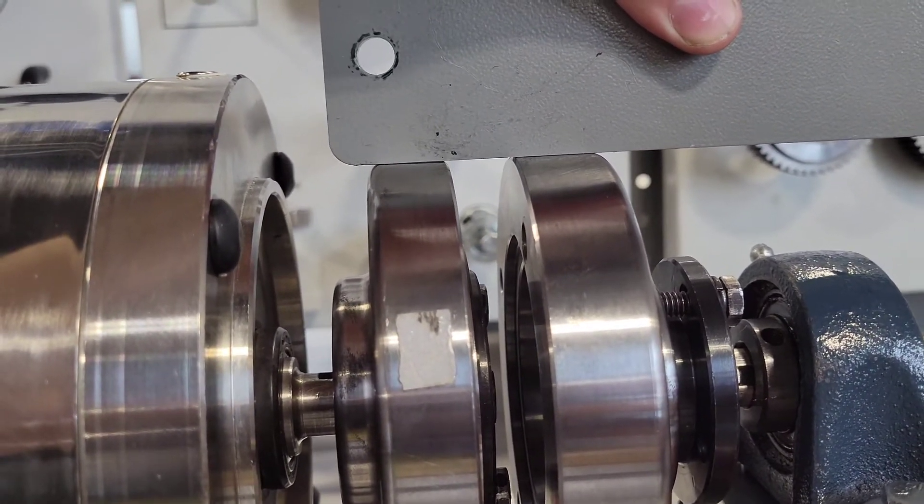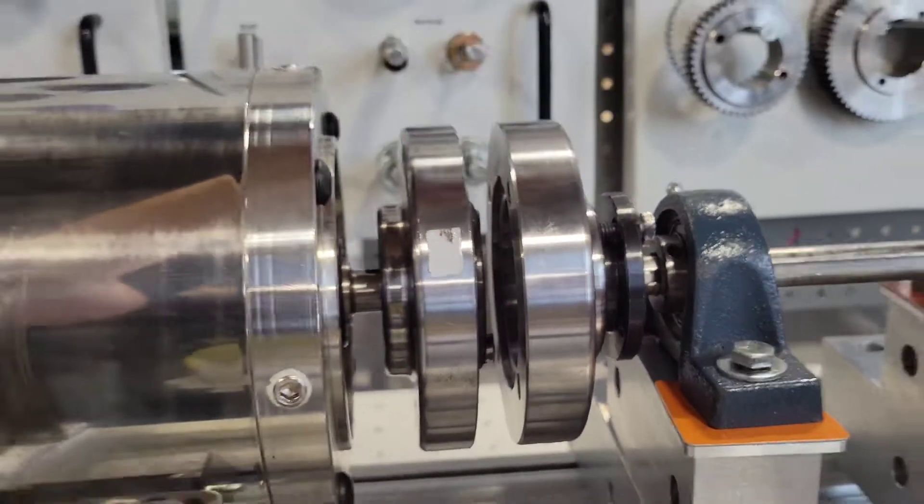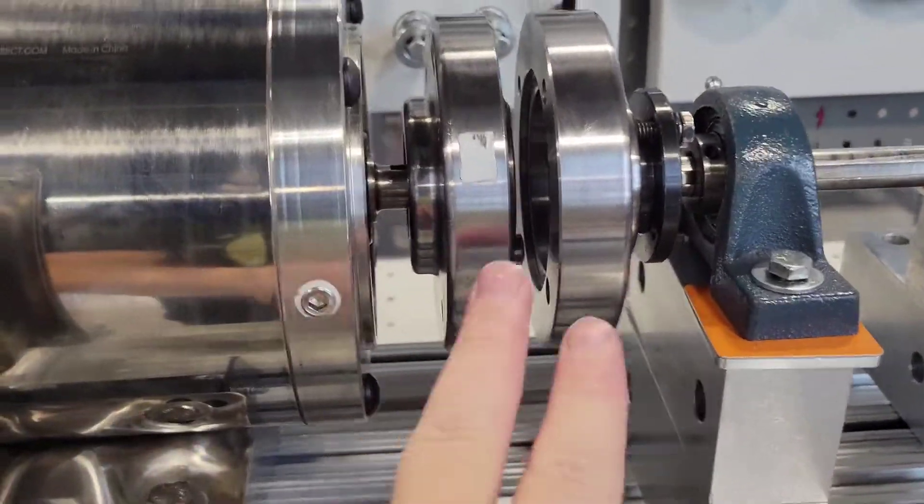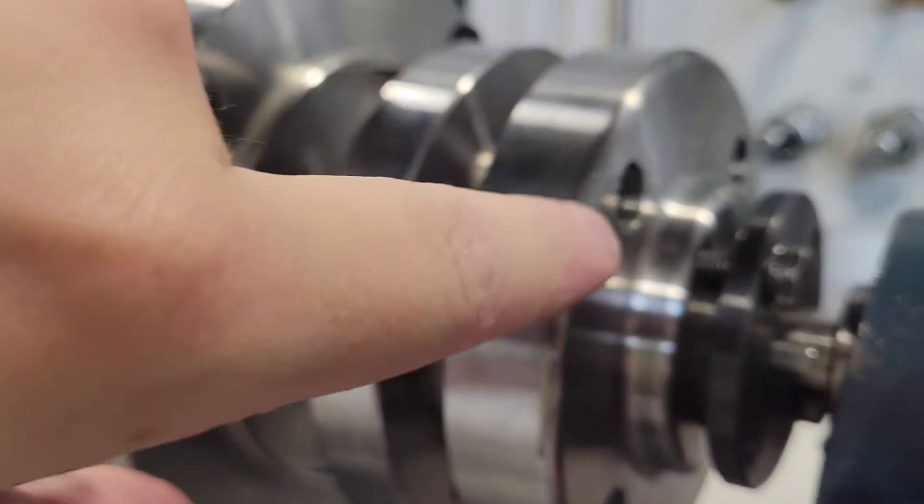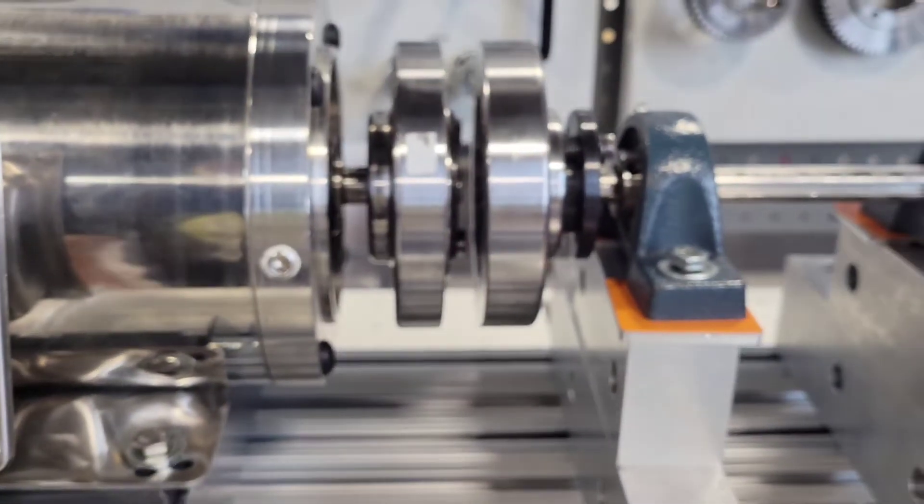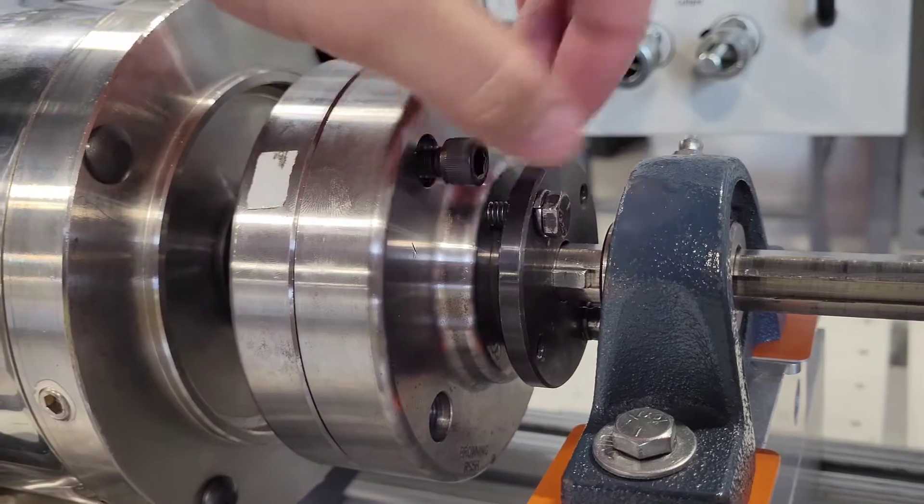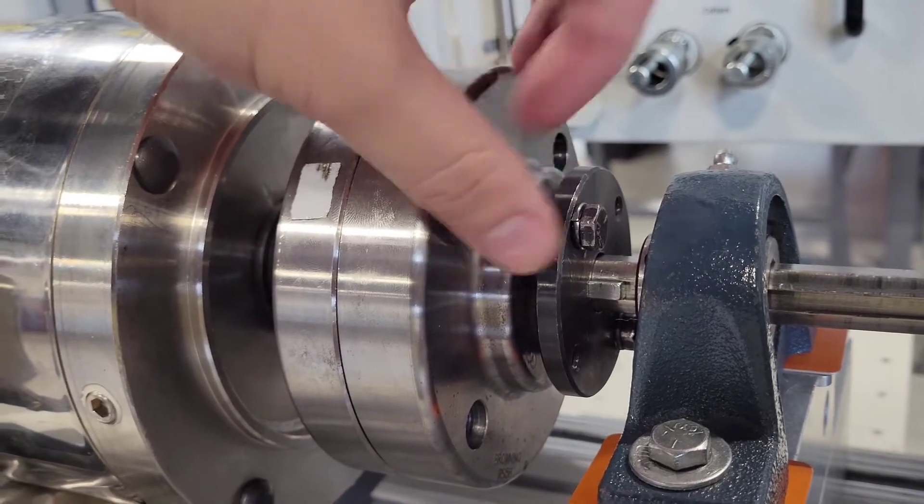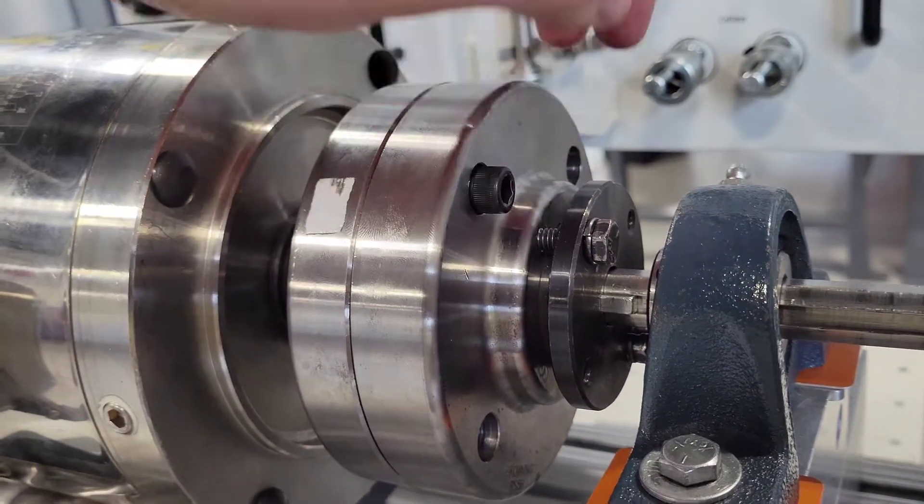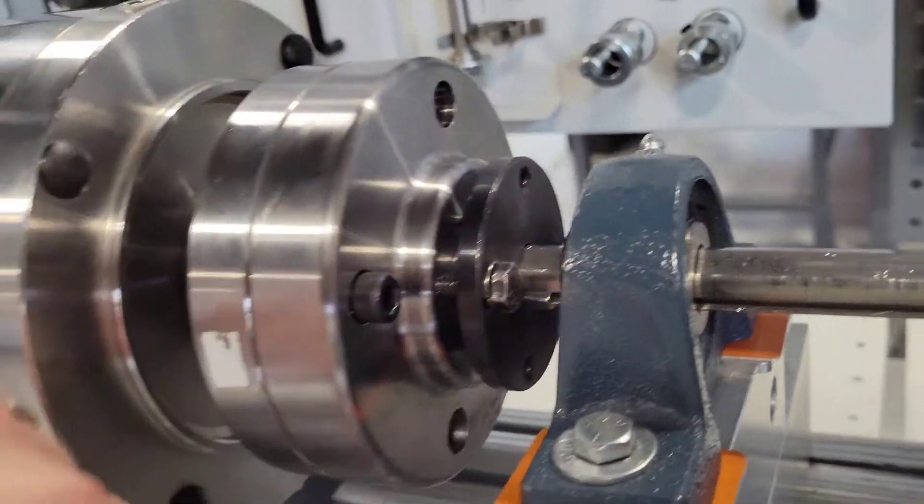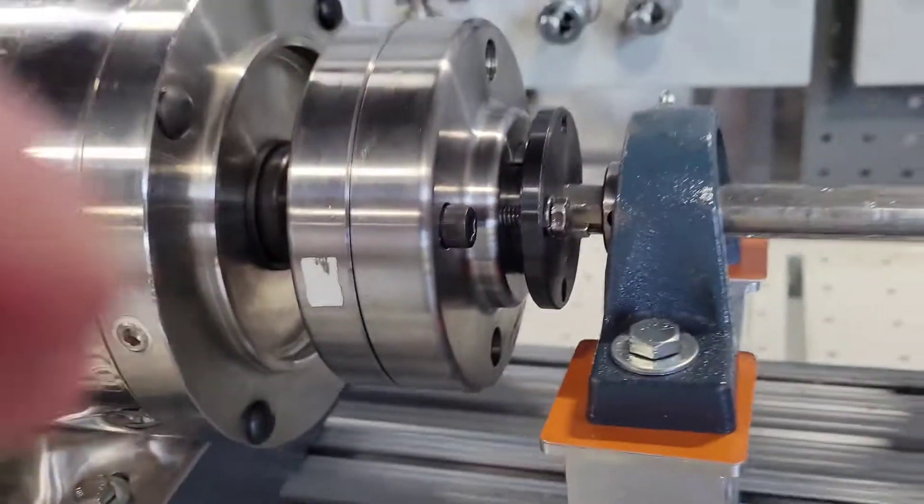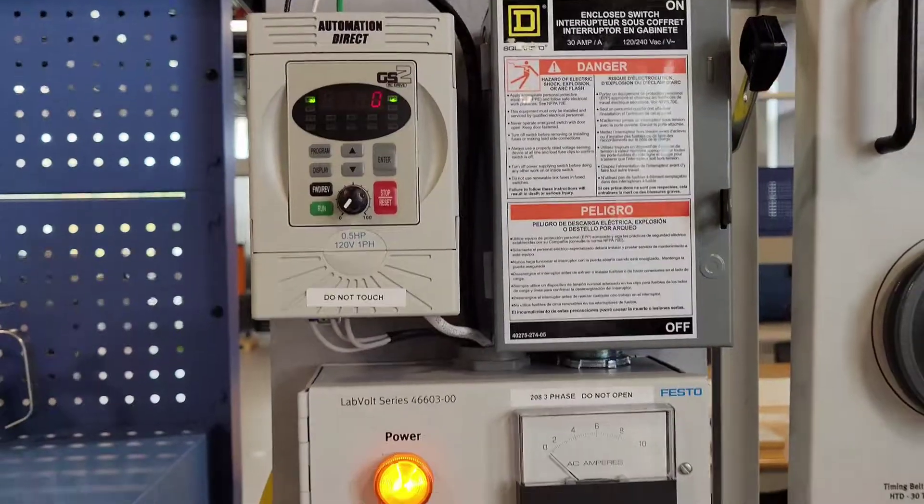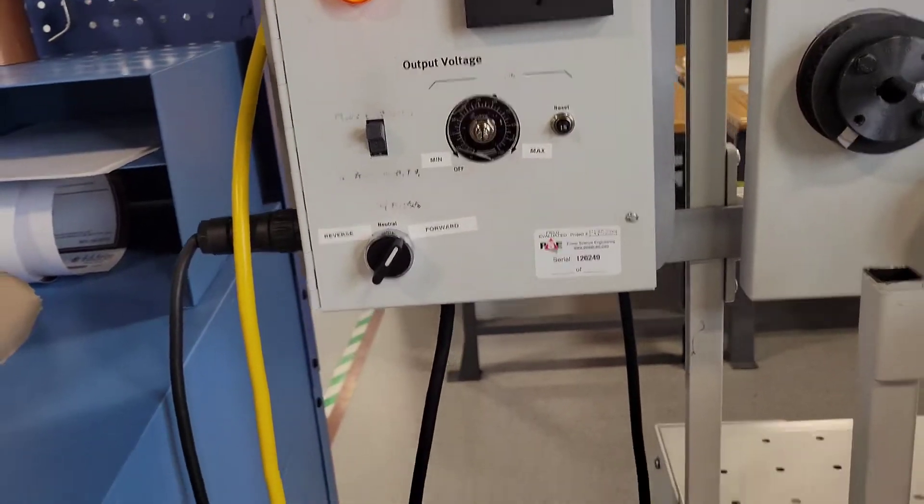So we're going to take the screws and mate them in all four of these holes and get the system running. Screwing in one of the screws and then there's one here, one on the bottom and one on the other side to ensure that it stays together.